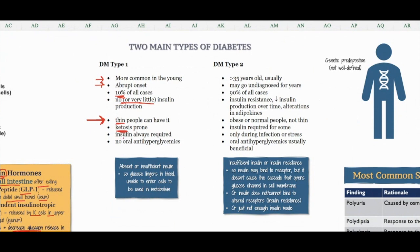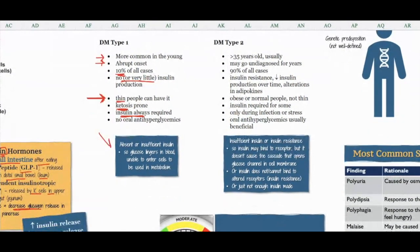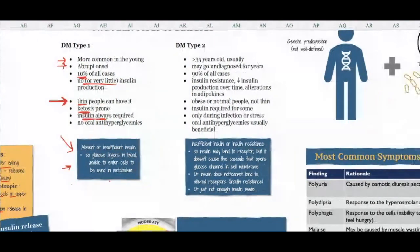In diabetes type 1, insulin is always required. A person who has type 1 is not making enough insulin, or not making any at all, so they must have exogenous insulin given to them, or they will go into DKA and basically go into shock and die. When you have absent or insufficient insulin, glucose is lingering in the blood and is unable to enter the cells to be used in metabolism.